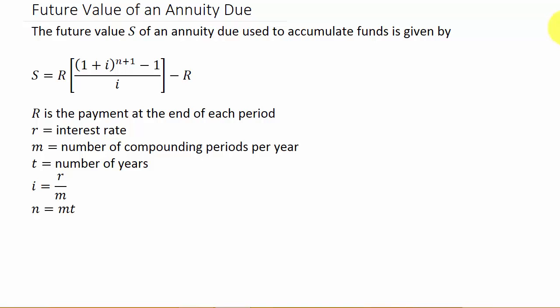The future value is the total amount of all deposits, all the payments, and all interest earned. The future value of an annuity due is the same thing except the payment is made at the beginning of each period.